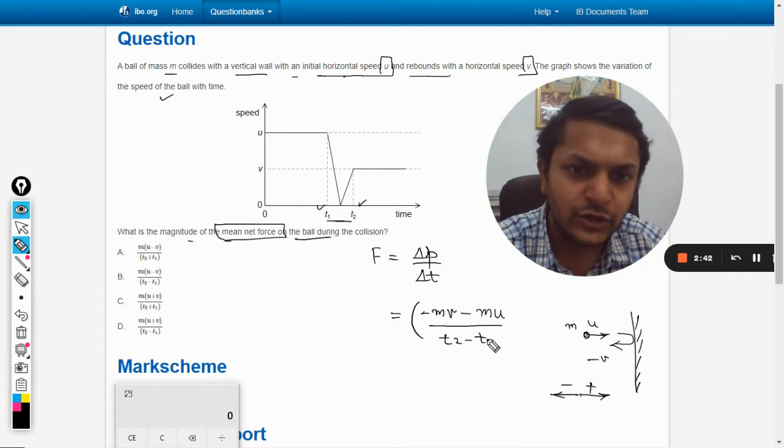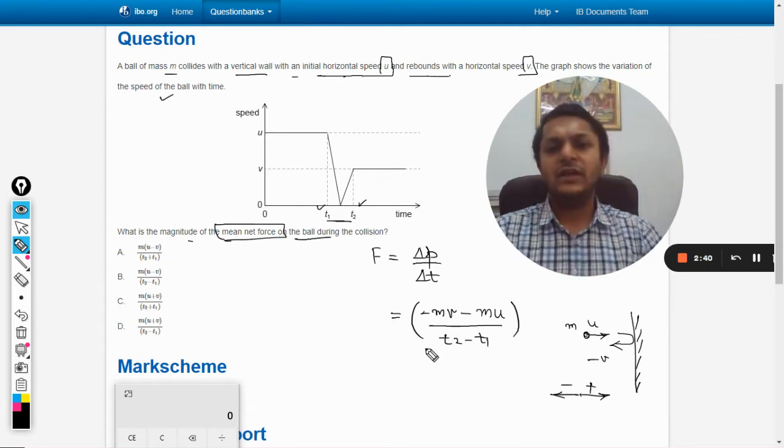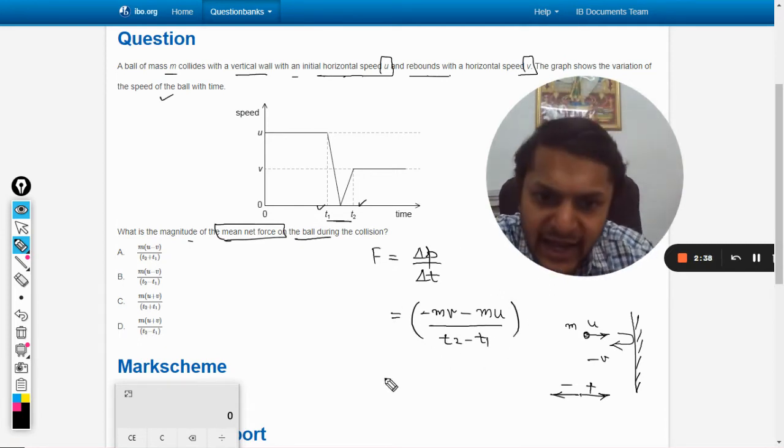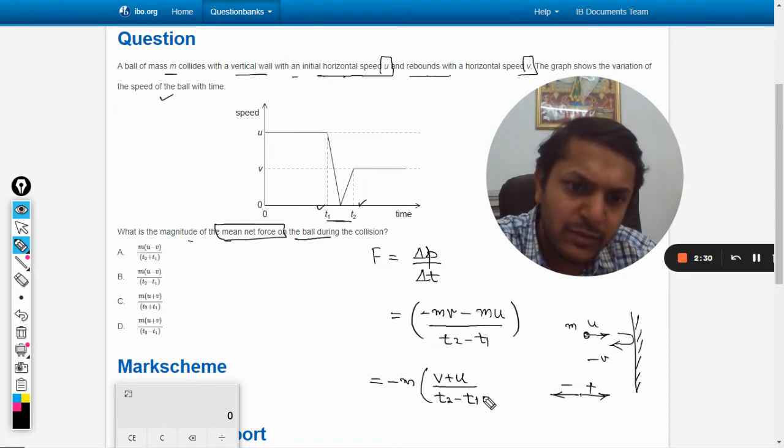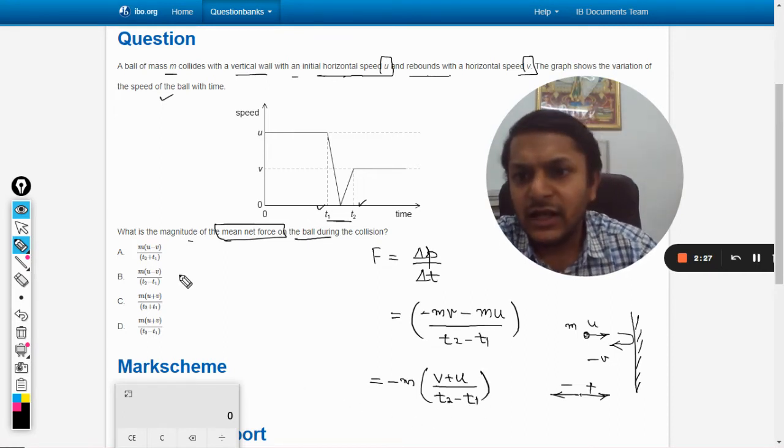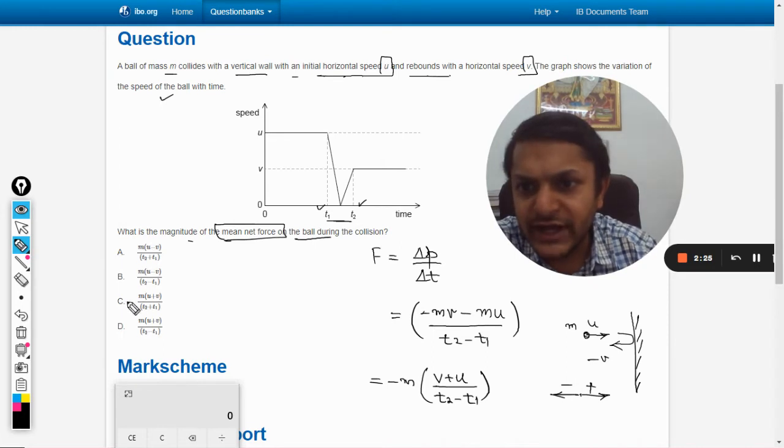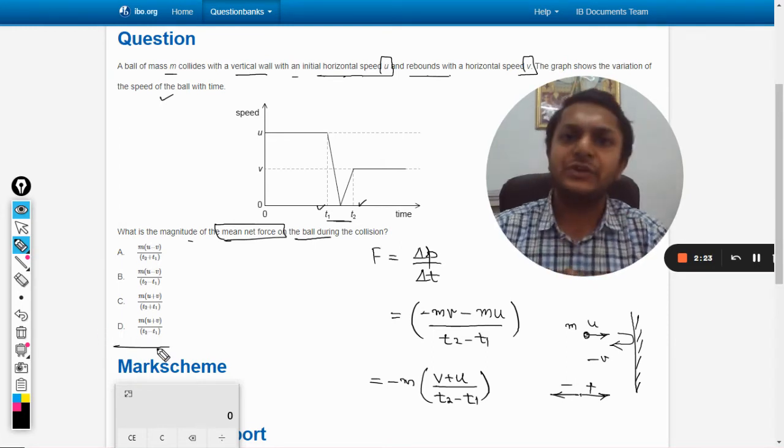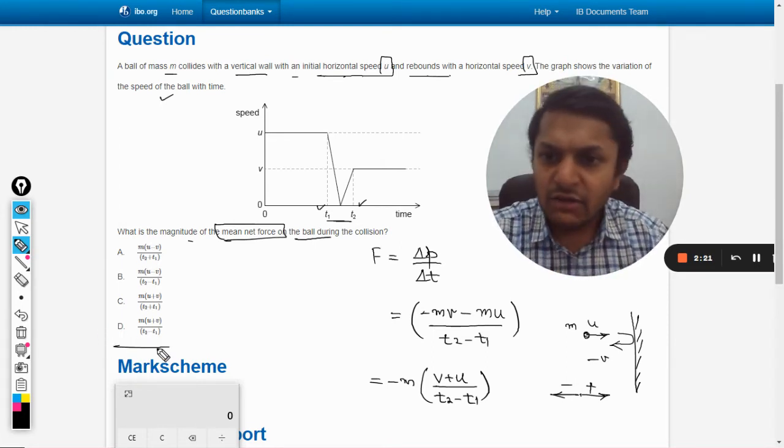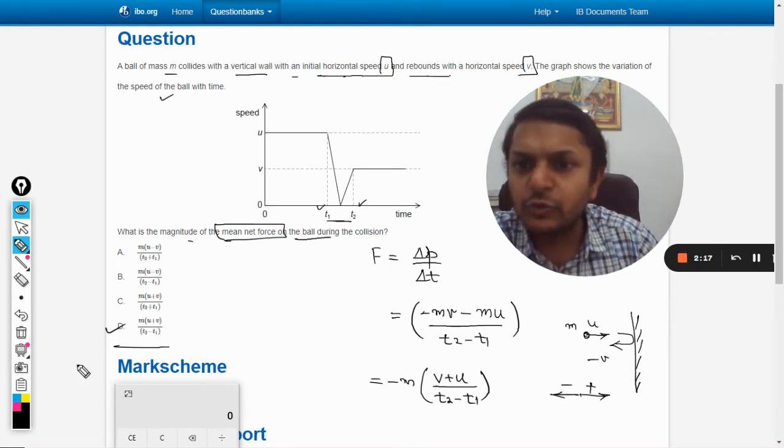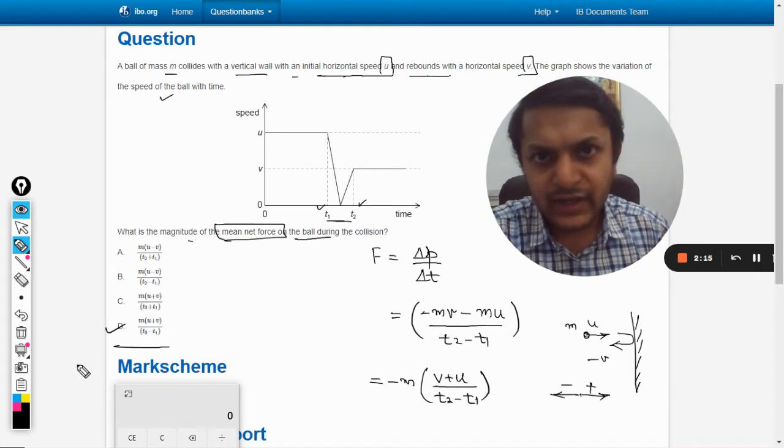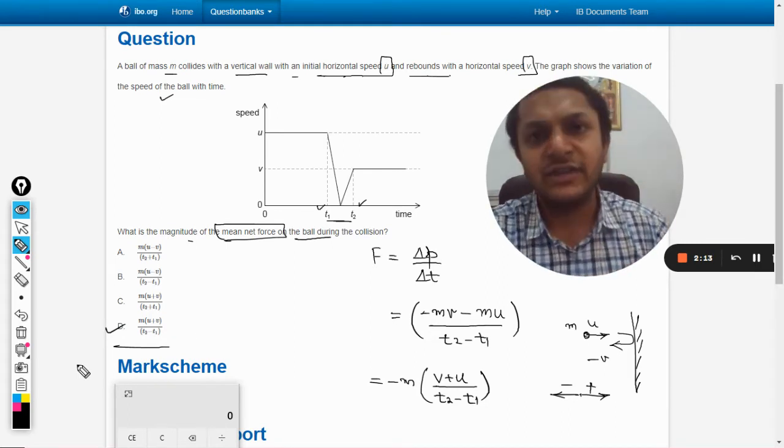So this should be the force and the force is coming out to be minus m times (v plus u) divided by (t2 minus t1). Now the point to be noted is there is no negative sign here in the options. But if we see the magnitude, then d is coming out to be the correct answer for us. But there is a problem of the negative sign.